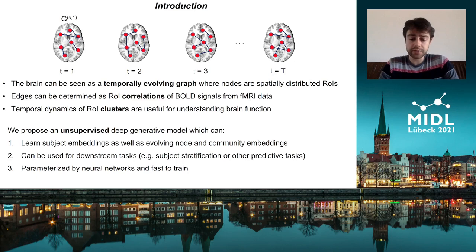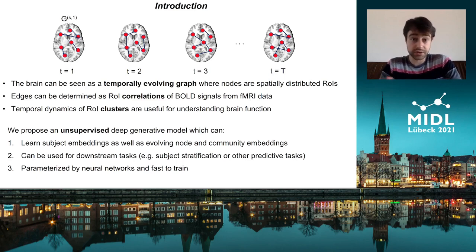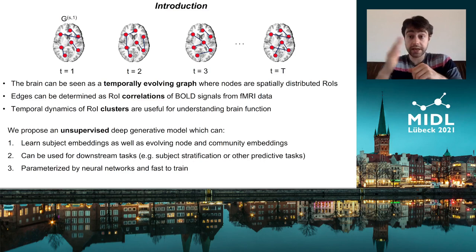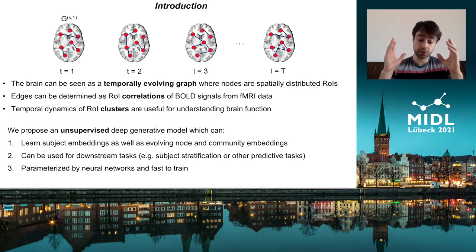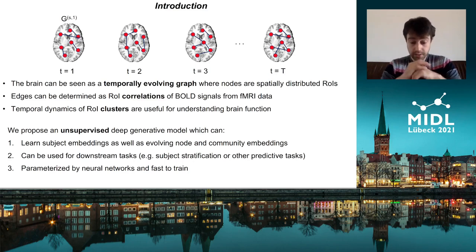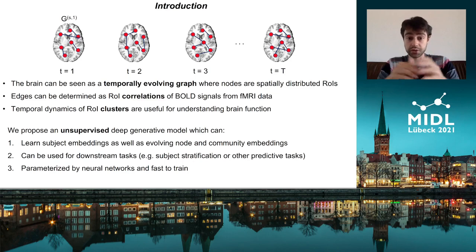In addition, uncovering the hidden community structure — that is, the way the regions of interest cluster in the brain — can be key to understanding brain function and dysfunction, which is also something we achieve with our model. The key goal is to learn multi-scale representations of the brain, from the subject level incorporating information about the spatiotemporal graph of a single subject, to more local representations such as evolving community and node embeddings. The learned evolving representations can be used for downstream tasks such as biological sex classification or identifying novel subject movements.